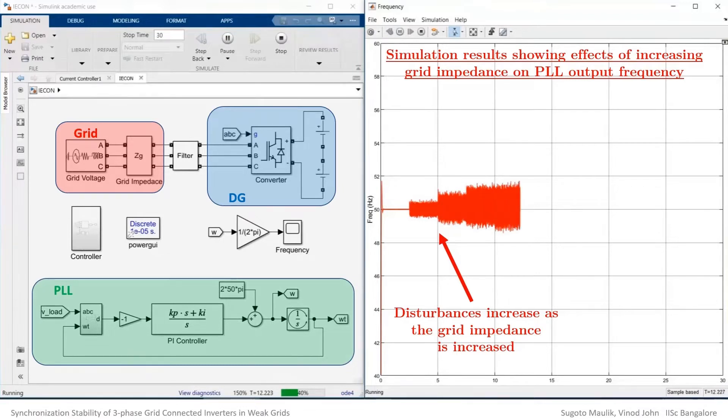It can be seen while the grid impedance of the simulation model is progressively increased, so is the disturbances at the output of the PLL.